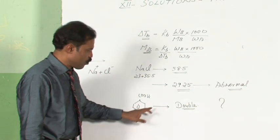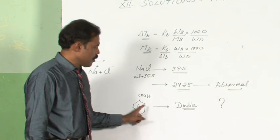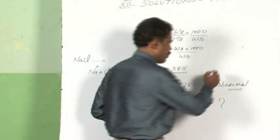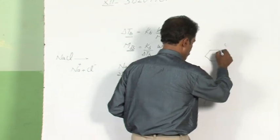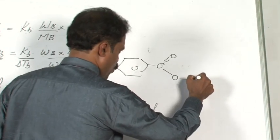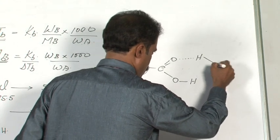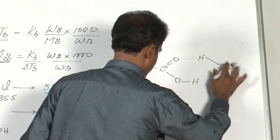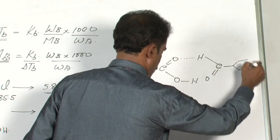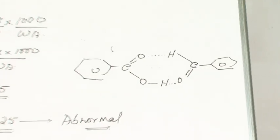Whereas in benzoic acid, the molecular weight is getting doubled. You must have guessed — this must be getting associated. In the case of sodium chloride it is getting dissociated, whereas because of hydrogen bonding, benzoic acid gets associated.